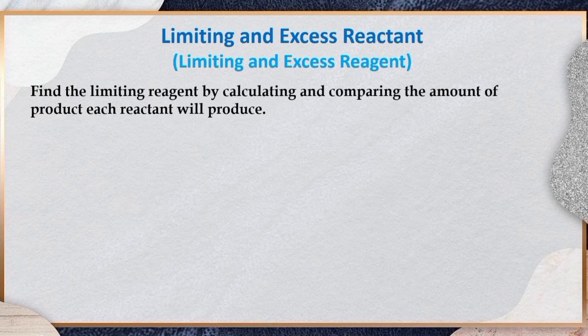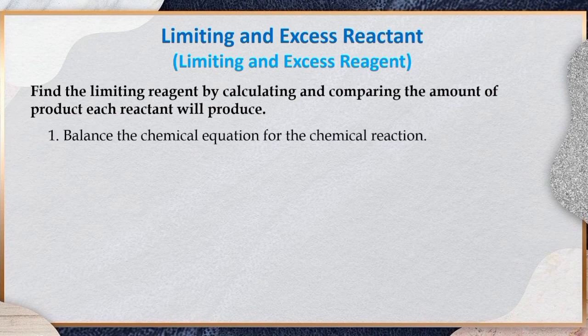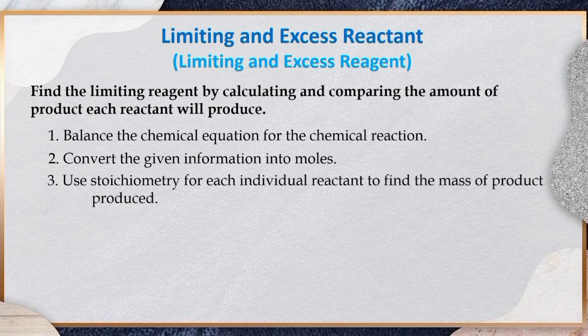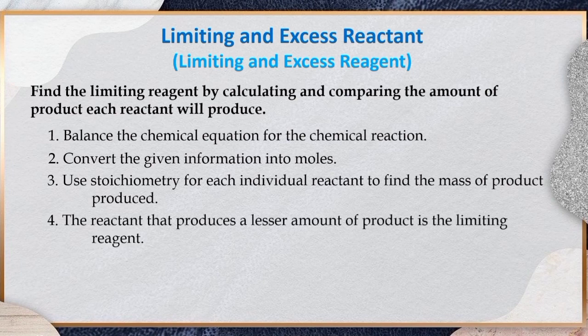Here are the following simple steps in finding the limiting reagent by calculating and comparing the amount of product each reactant will produce. Step 1: Balance the chemical equation for the chemical reaction. Step 2: Convert the given information into moles. Step 3: Use stoichiometry for each individual reactant to find the mass of product produced. Step 4: The reactant that produces a lesser amount of product is the limiting reagent.